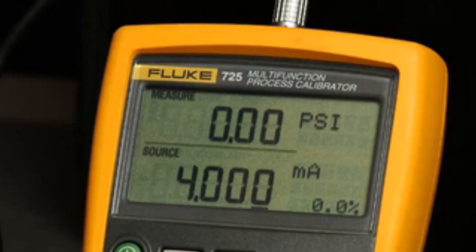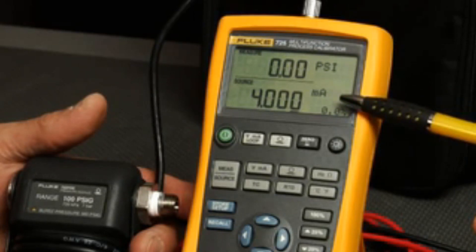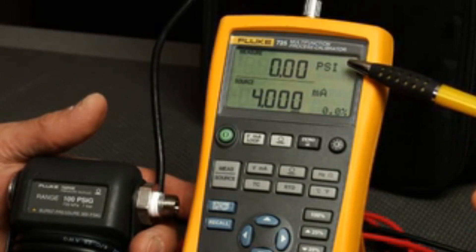Since the 725 has a dual screen, you can view both the input and output values applied to the transmitter or other process device being tested. For example, you can test valves, I2Ps, and view the milliamp value being sourced, as well as the milliamp or pressure on the output of the device simultaneously.